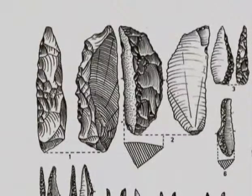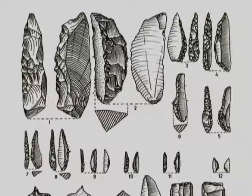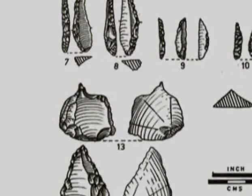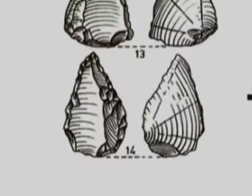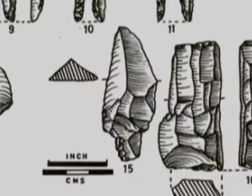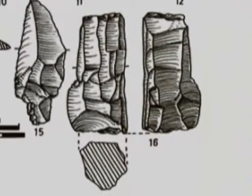These are artefacts from Renigunta. One and two are backed knives. Three to twelve are backed blade and bladelet industries — bladelets are even smaller blades. Thirteen is an awl — a sort of roundish, thicker tool made on a flake with a pointed tip, meant for some kind of engraving activity. Fourteen is a unifacial point, meaning only one face has been worked on. Fifteen is a tanged point — the butt end looks like a tang. And there is also a blade core. All these classifications have been worked out in detail by archaeologists.